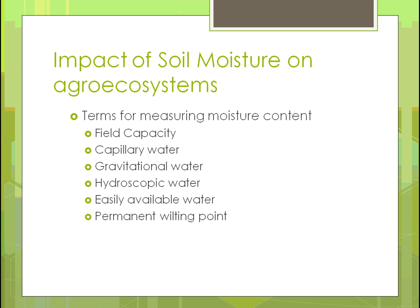Some terms for measuring moisture content include: field capacity — how much water can be held in an area; capillary — the ability of water to flow through the soil; gravitational — when there's too much water on the surface and gravity pulls it down; hygroscopic water — easily available water. There is also the permanent wilting point — when moisture content drops so low for long enough, the plant wilts so severely it will never recover. Easily available water is water that a plant can access without much effort.